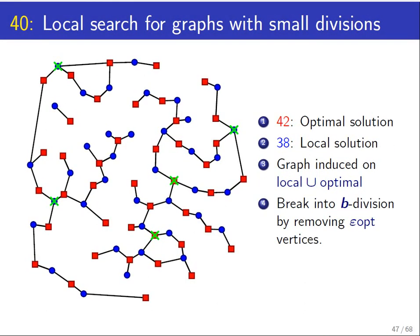We compute this small separator—we compute a b-division using the separator. We remove all the boundary vertices; this breaks up the graph into patches, every patch of size at most b. In particular, the local search algorithm would have considered every one of those patches as an exchange possibility. This implies readily that for every patch, the local and the optimal solution are balanced—they're roughly the same.